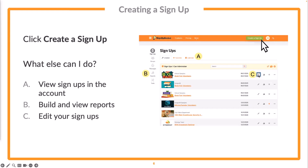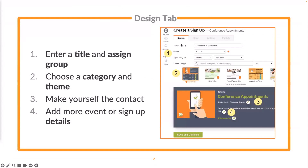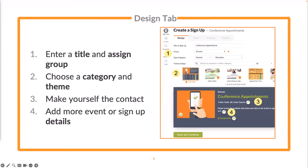We're going to go ahead and get started. Click create a sign-up and we start with the first step, which is the design tab. The design tab is where you'll enter the title of your sign-up and assign a group — that's who you're inviting. Notice that the group does show up on your sign-up, so you might want to make it something like Miss Johnson's 2023-24 class that makes sense to identify who you're inviting. The next section is your category, which is strictly for Sign-Up Genius purposes and will not impact your finished product.